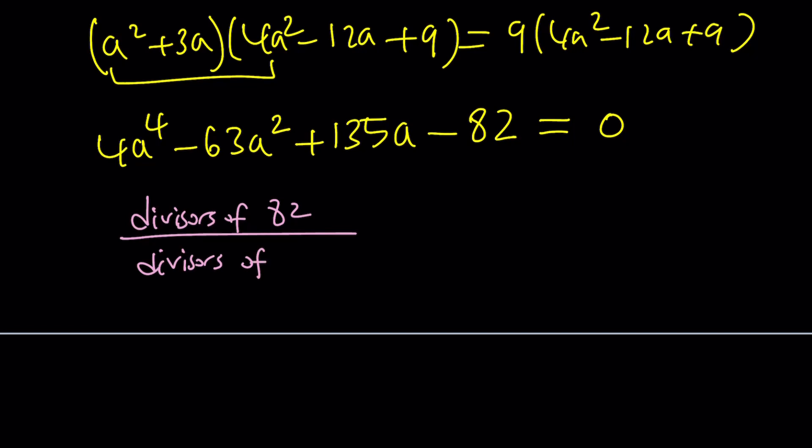From rational root theorem, we can have plus minus 1, plus minus 2. I think this is 2 times 41. So plus minus 41 and plus minus 82. And all those alternatives divided by plus minus 1, plus minus 2, plus minus 4. A lot of candidates. And then you're going to plug them in and test it out. Let me tell you something.